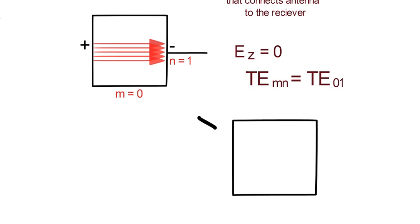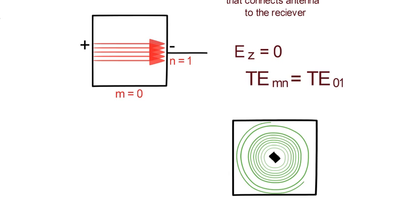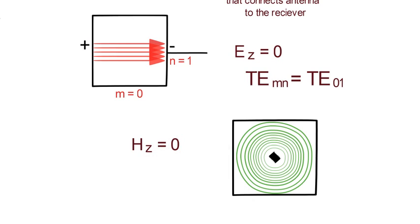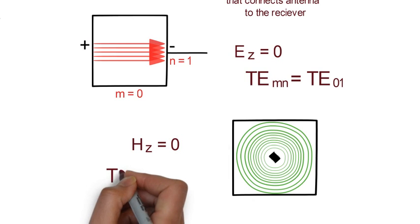If the feed is along the guide axis z then it will always give a surrounding magnetic field in x y plane and magnetic field in z direction will be zero. So this is a transverse magnetic mode of operation.